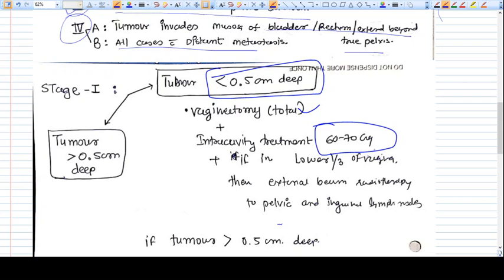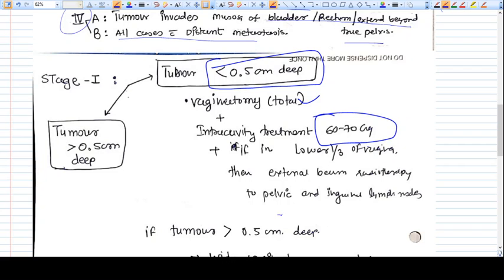Total vaginectomy followed by vaginal reconstruction and intracavitary brachytherapy should be given at 60 to 70 Gray. If the tumor is in lower one-third of vagina, external beam radiotherapy to pelvis and inguinal lymph nodes should be given, because from lower one-third the draining lymph nodes are inguinal.